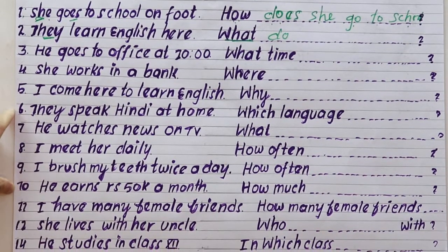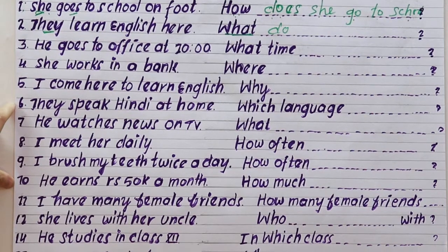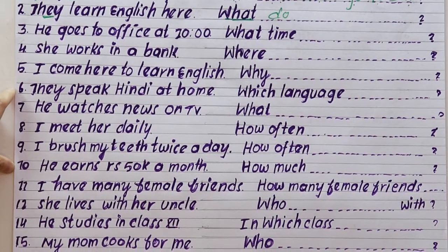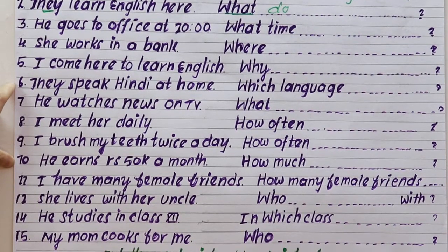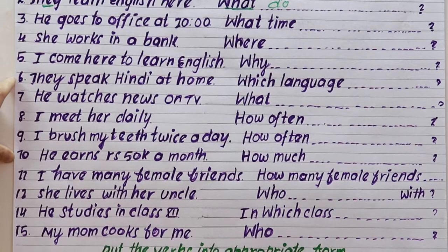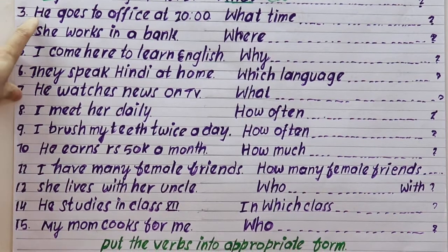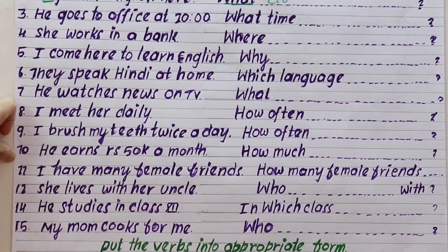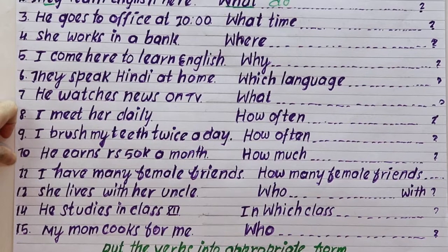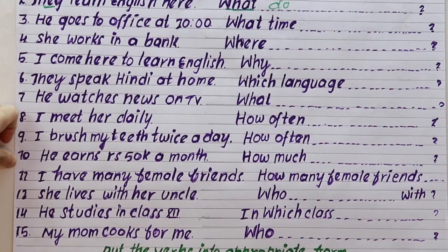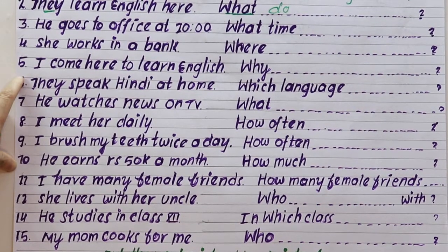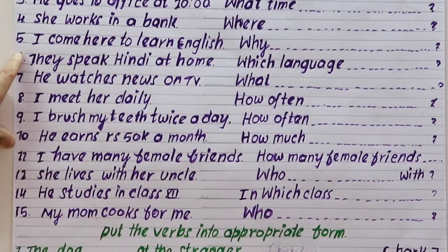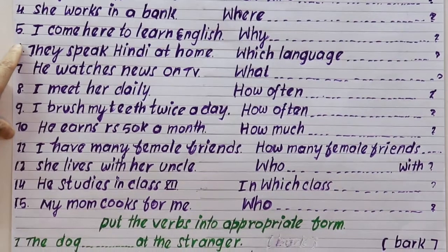Number three: He goes to office at 10 AM. You have to ask about time. What time does he go to office? Number four: She works in a bank. She works in a bank.